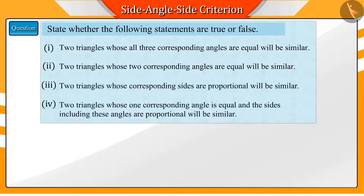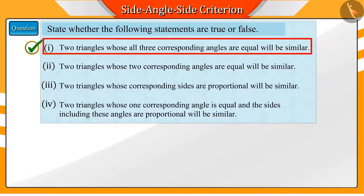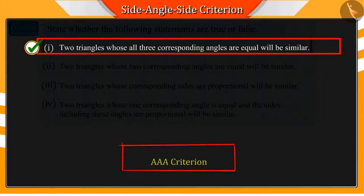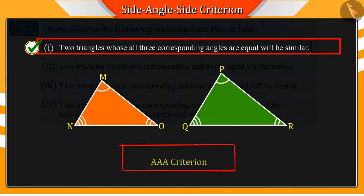What can you say about the first statement? The first statement is correct. Can you tell why? According to the AAA criteria, any two triangles whose corresponding angles are equal are similar to each other.